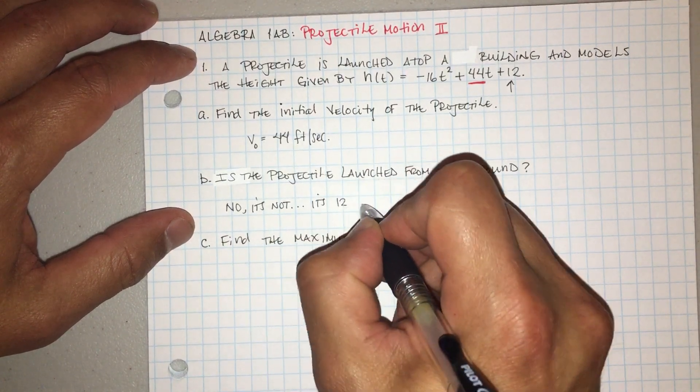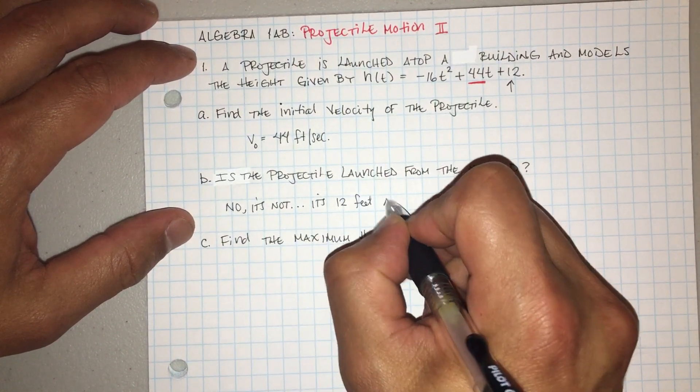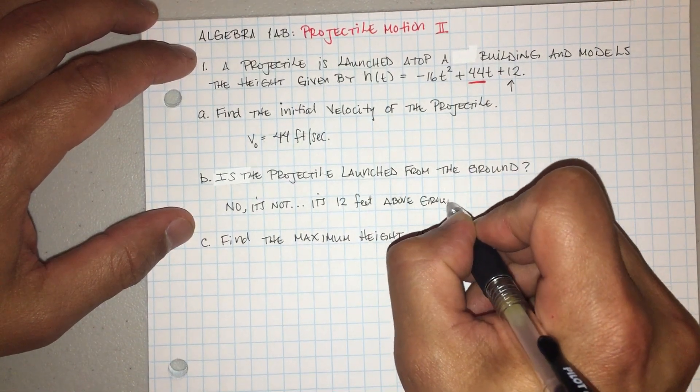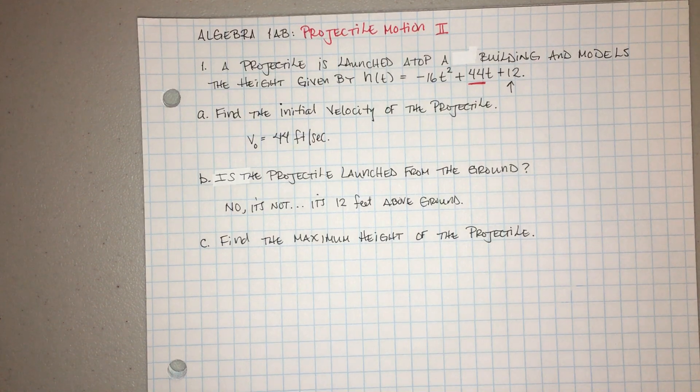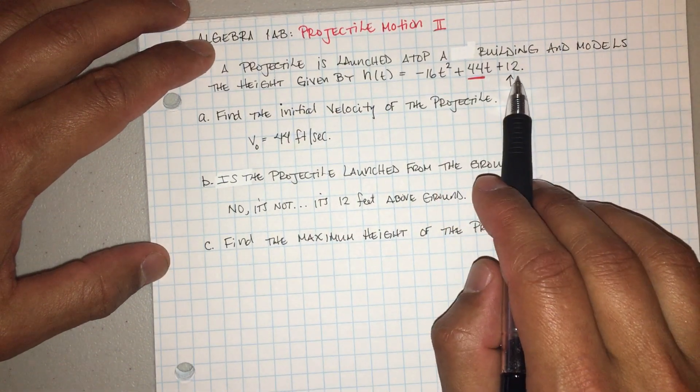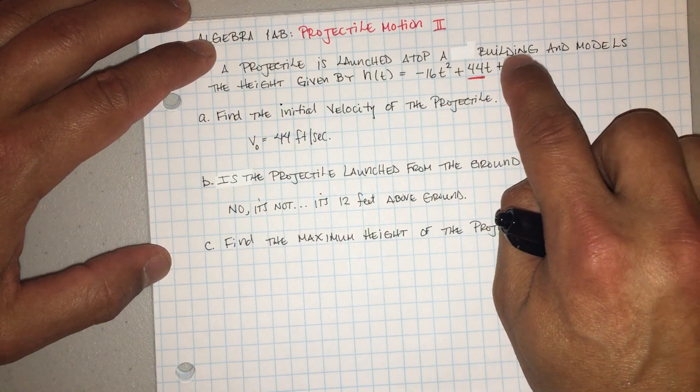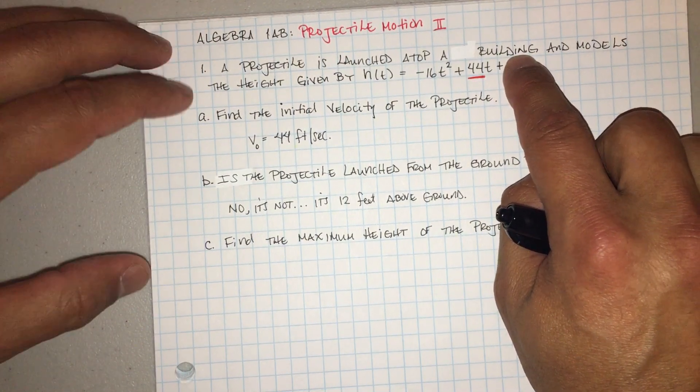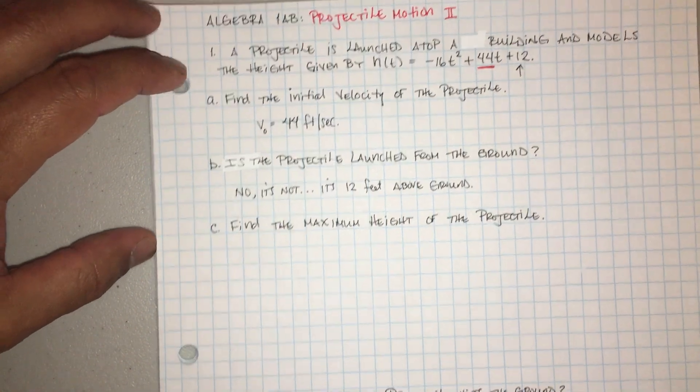It's 12 feet above ground. And it makes sense because then that would make it, it would give it a, it would make sense that it would be on top of a building. Entonces este me da la velocidad, este me da la altura. Si no ven el número aquí, if you don't see a number here, then automatically it's zero, which means it's being launched from the ground.